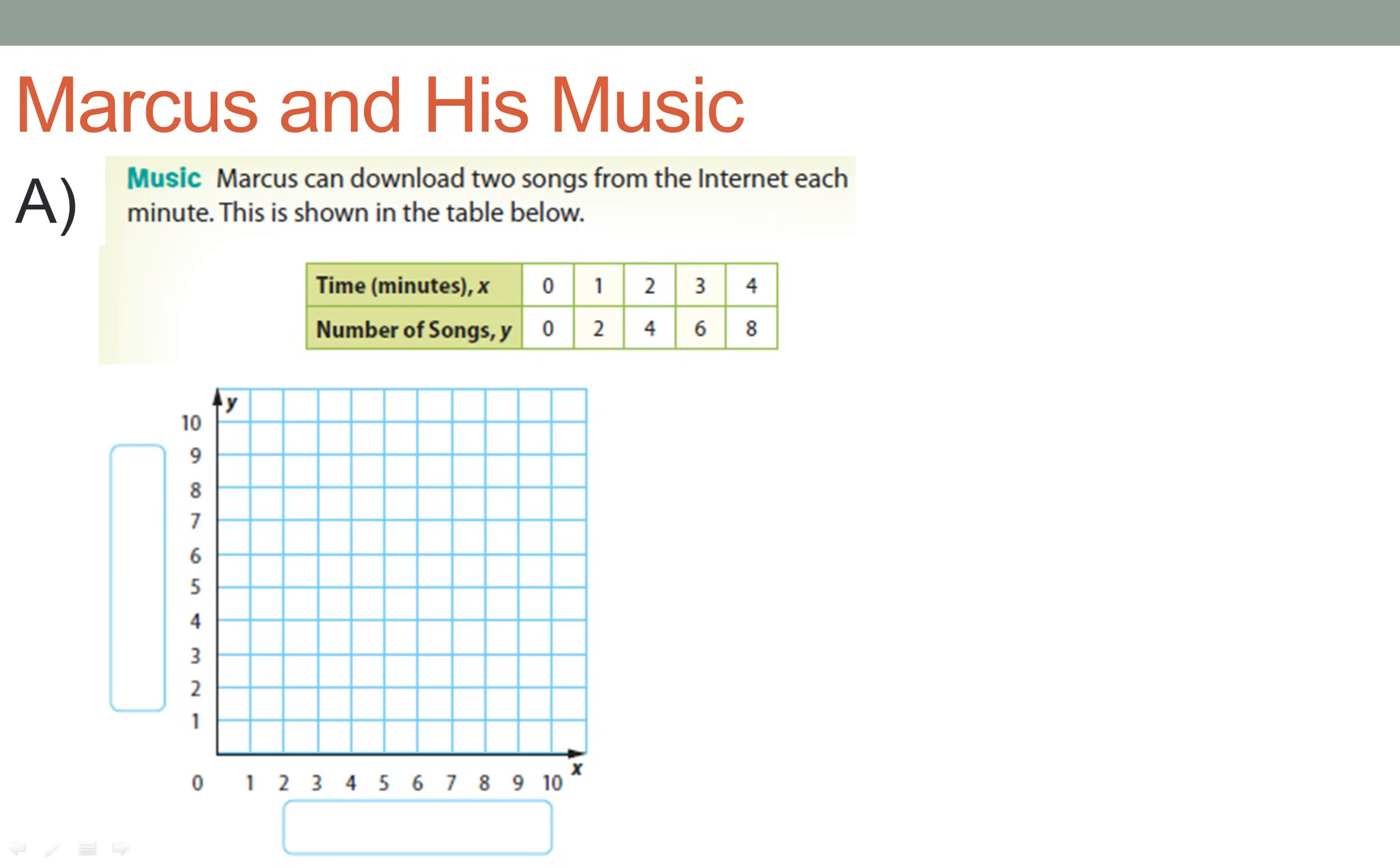All right, cool. Let's talk about Marcus and his music. So the table at the top actually shows Marcus can download two songs from the internet each minute. That's shown in the table that we have right here. So what does this mean? That means on the graph I can actually start plotting points. So on the x-axis I got time, and on the y-axis, of course, the number of songs.